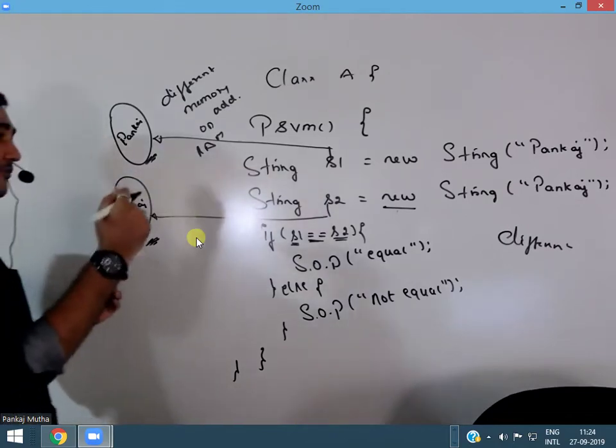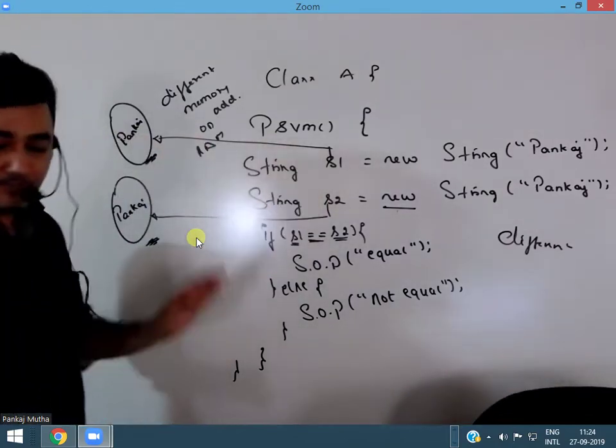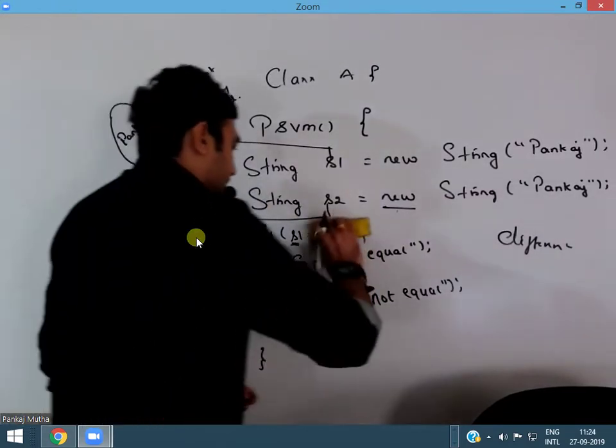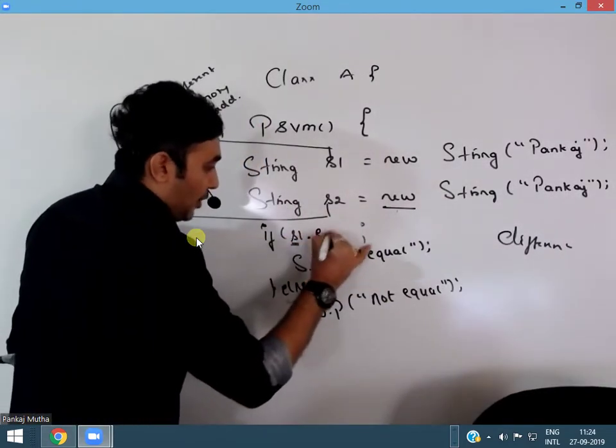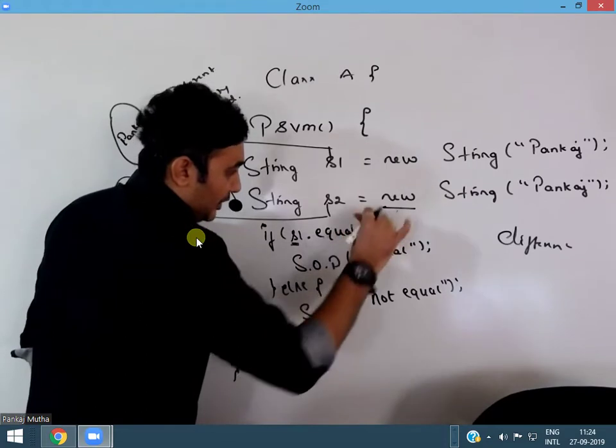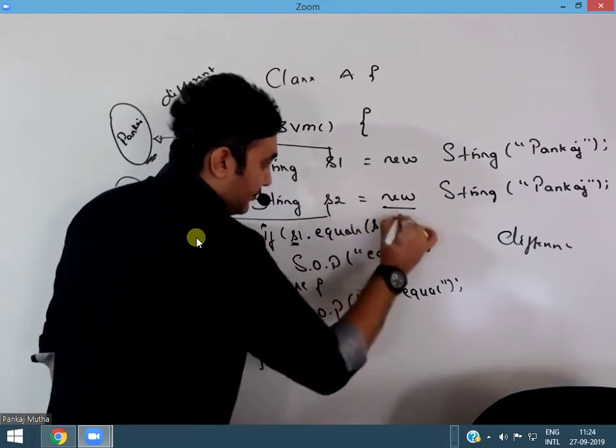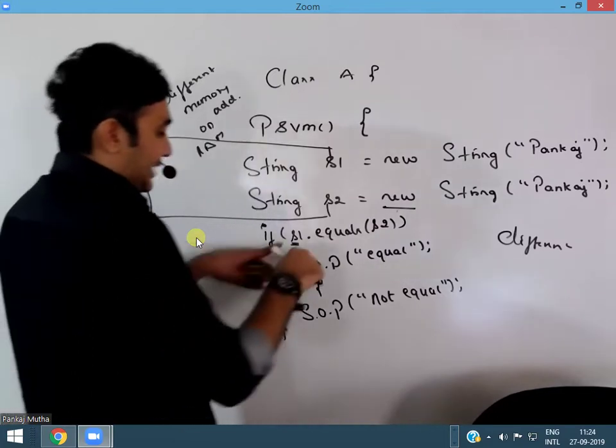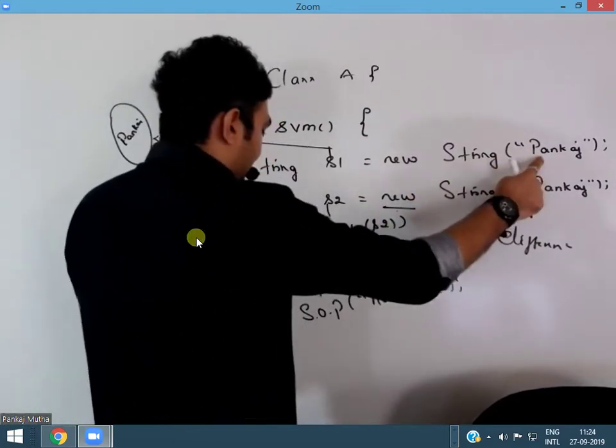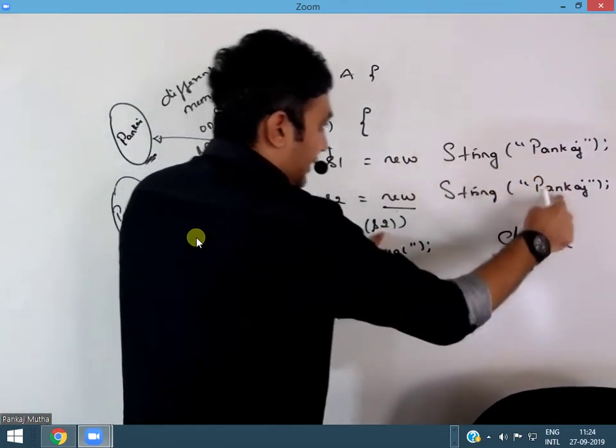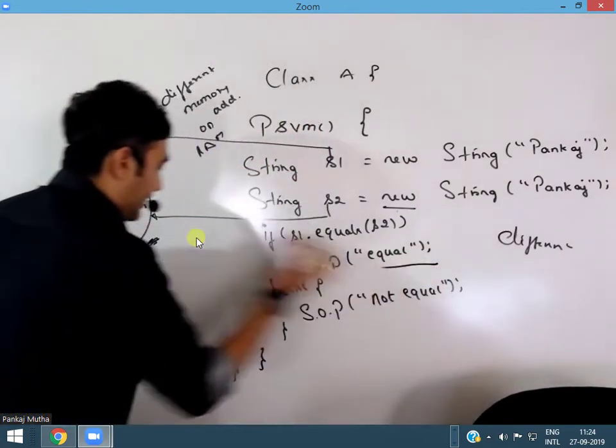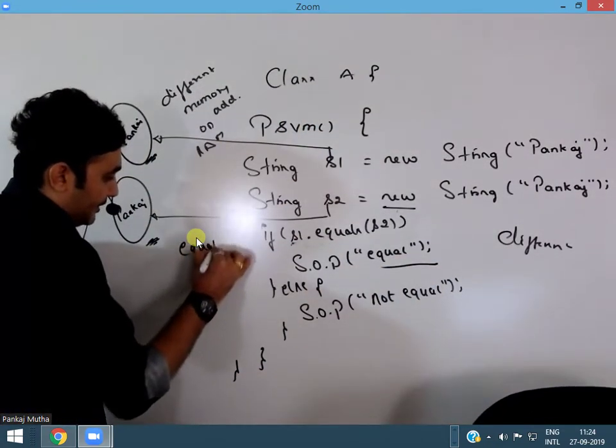Then how do we compare the values stored in that object? In that case we should use s1.equals(s2). Now when I do this, it will compare Pankaj the value. Is it equal to Pankaj? If yes, then the output would be equal.